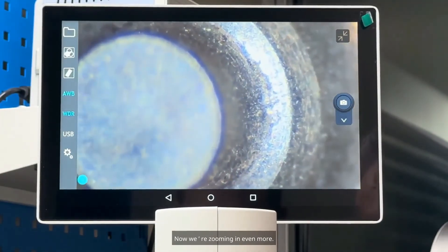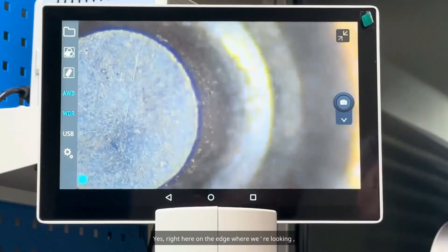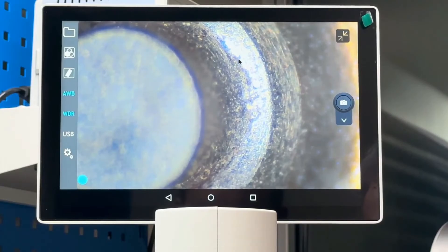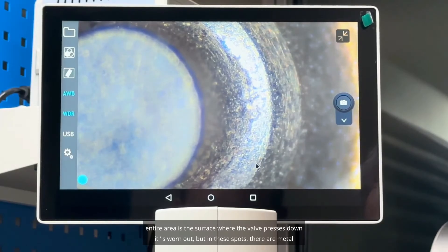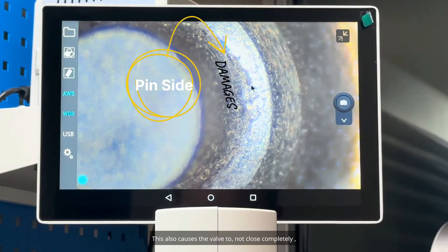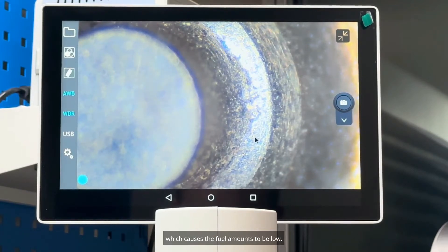Now we're zooming in even more. Right here on the edge where we're looking, if you pay attention there are metal buildup in these areas. So this entire area is the surface where the valve presses down. It's worn out. But in these spots, there are metal deposits caused by the wear. This also causes the valve to not close completely, which causes the fuel amounts to be low.